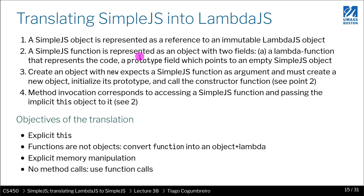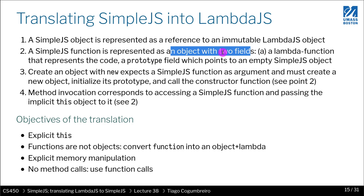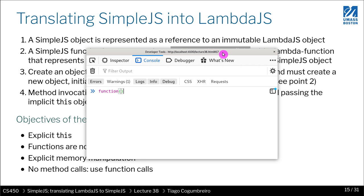A Simple.js function is going to be two things. It's going to be a lambda, essentially a function in JavaScript representing an object. To represent that using Lambda.js, you create an object with two fields: a placeholder for the code — where you store the actual code being run — and a placeholder for the prototype, which is a reference to another object.